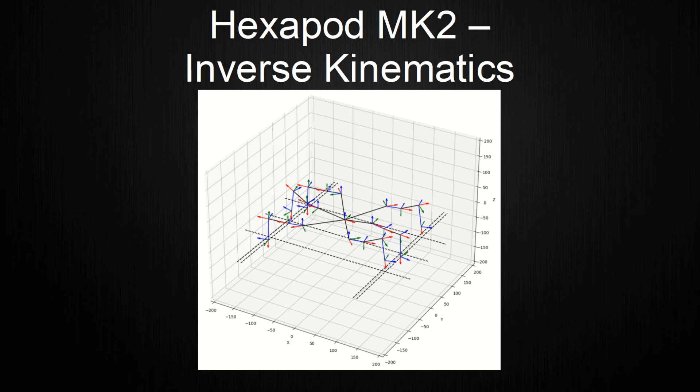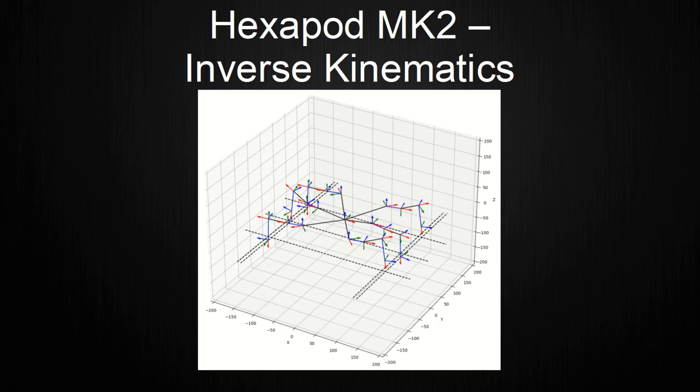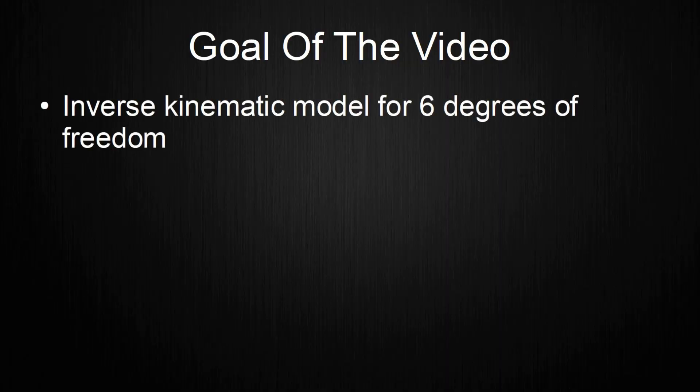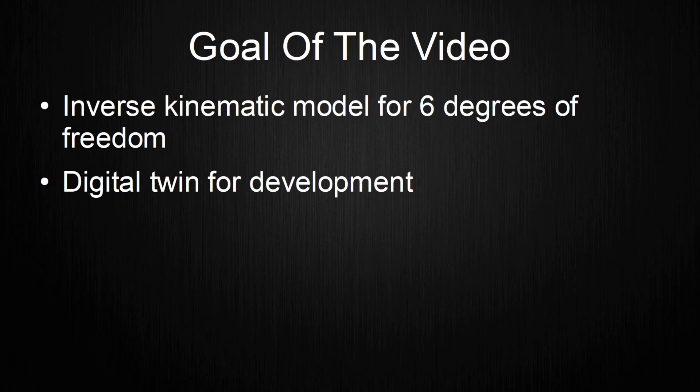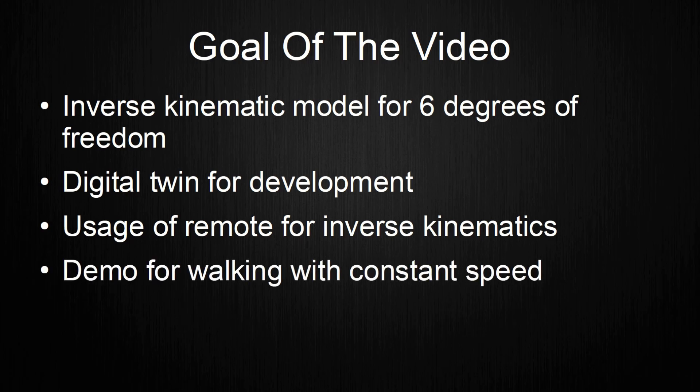This video shows how I got from controlling the legs with angle sliders like this to only using the coordinates of the field like this. The goal is to have a working inverse kinematic model for all 6 degrees of freedom. A digital twin of the hexapod should be created in order to develop the inverse kinematics in simulations to avoid possible damage to the hexapod. The inverse kinematic model should use the remote for stationary tests. A demo for walking with constant speed should be created to act as the foundation for future developments.